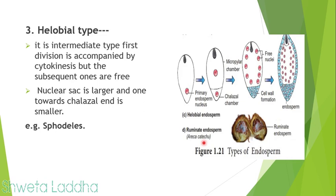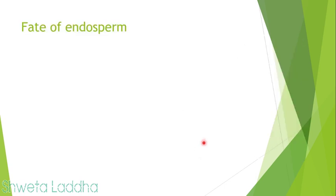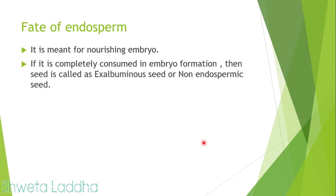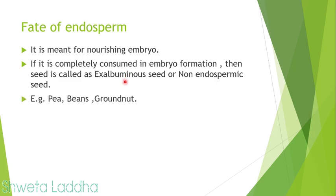Having completed the process of endosperm formation, let us see the fate of endosperm. The endosperm is meant for nourishing the embryo — it provides food to the developing embryo, which will later develop into a seed. Sometimes the endosperm is completely consumed during embryo formation and is not present in the seed. Such seeds without endosperm are called ex-albuminous or non-endospermic seeds. Examples are pea, beans, and groundnut.